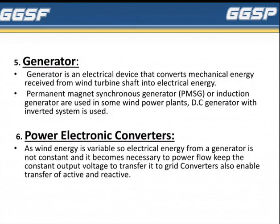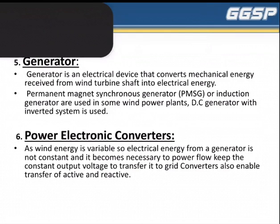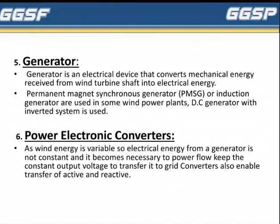The last component is Power Electronic Converters. As wind energy is variable, the electrical energy from the generator is not constant, so it becomes necessary to manage power flow, keep constant output voltage, transfer it to the grid converter, and also enable transfer of active and reactive power.